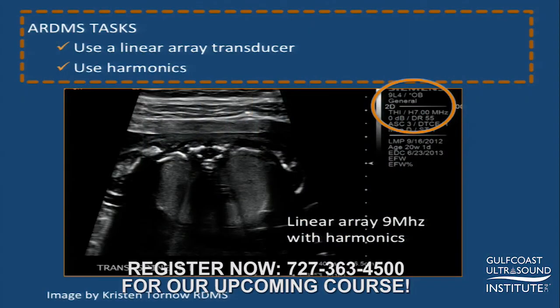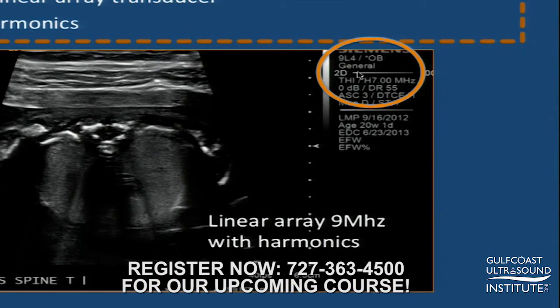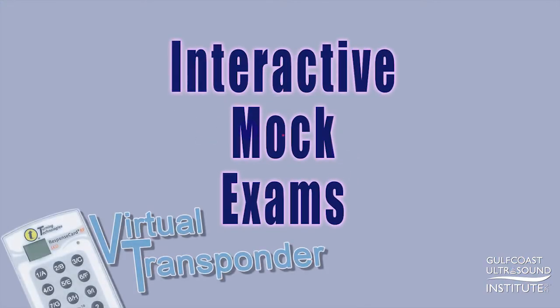One more thing I wanted to cover: the ARDMS task wants us to be able to use a linear array transducer, and they also say to use harmonics. So I want you to be aware of your annotations on the side of your images. THI is tissue harmonic imaging on this particular piece of equipment, and it's going to give us these really bright, beautiful images of the spine. This is with a nine linear array transducer with harmonics.